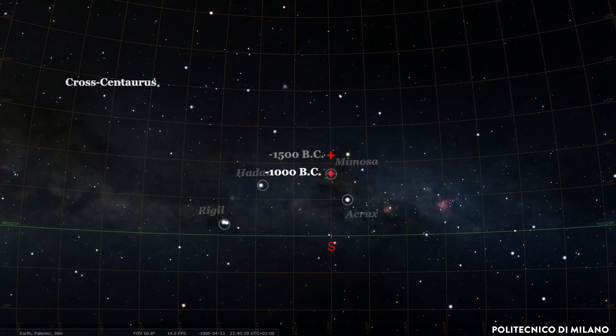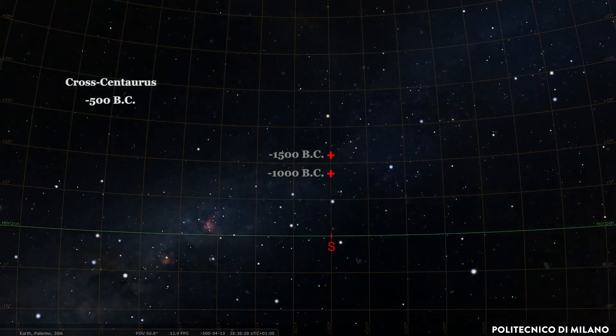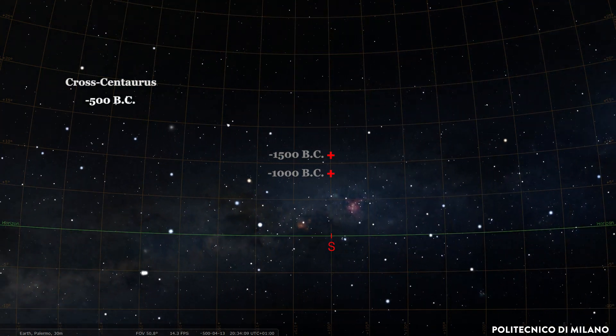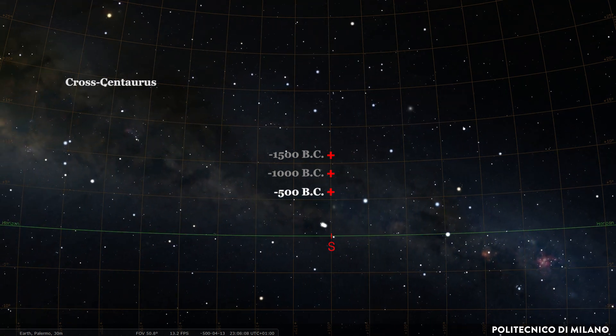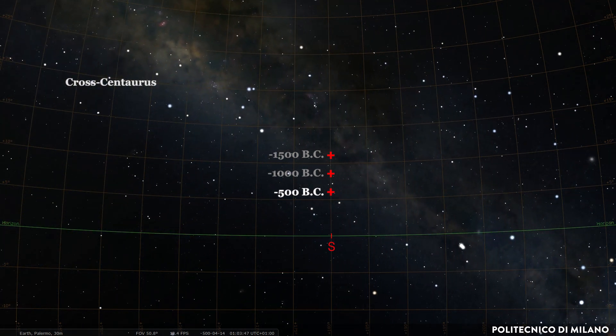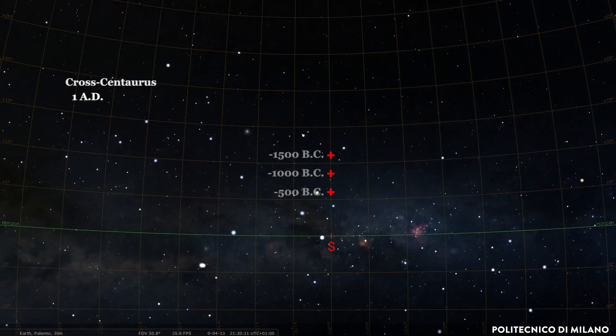One important example is the Crux Centaurus group, a prominent asterism of the southern hemisphere, which was still visible from the Mediterranean, although low on the southern horizon, up to the last millennium BC.